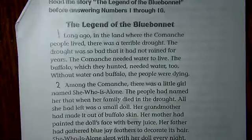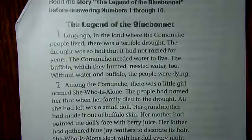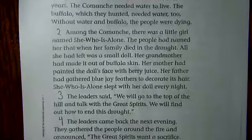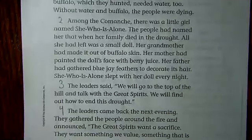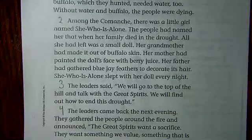Follow along with me as I read. Long ago in the land where the Comanche people lived, there was a terrible drought. The drought was so bad that it had not rained for years. The Comanche needed water to live, and the buffalo they hunted needed water too. Without water and buffalo, the people were dying. Among the Comanche there was a little girl named She Who Is Alone — the people had named her that when her family died in the drought. All she had left was a small doll her grandmother had made out of buffalo skin, her mother had painted the doll's face with berry juice, and her father had gathered blue jay feathers to decorate its hair. She Who Is Alone slept with her doll every night.